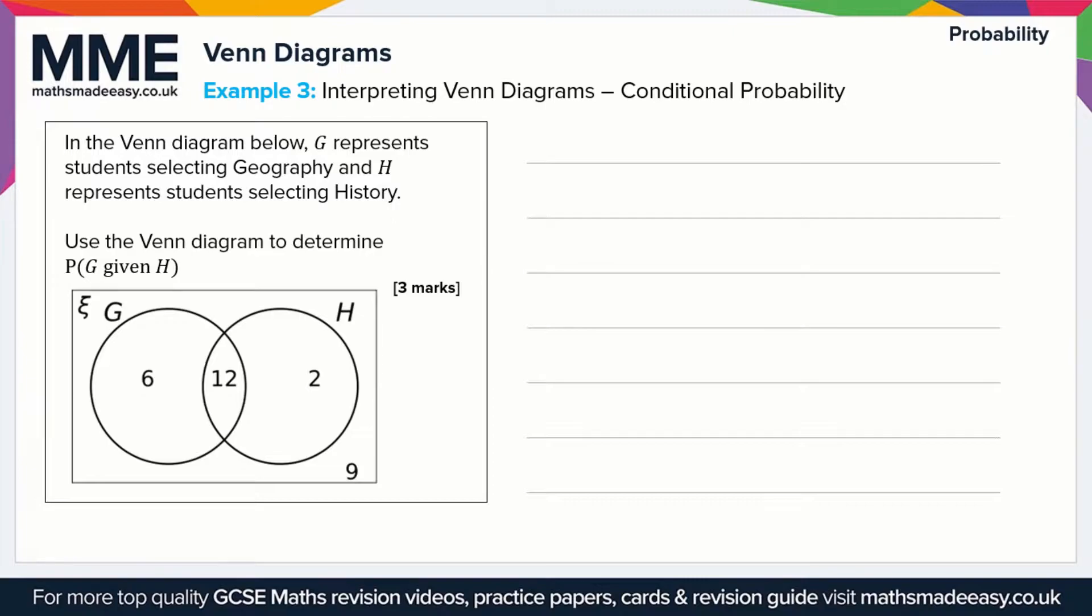So in the Venn diagram below, G represents students selecting geography and H represents students selecting history. Use the Venn diagram to determine the probability of G given H, so this means the probability that the student selects geography given that they've selected history.